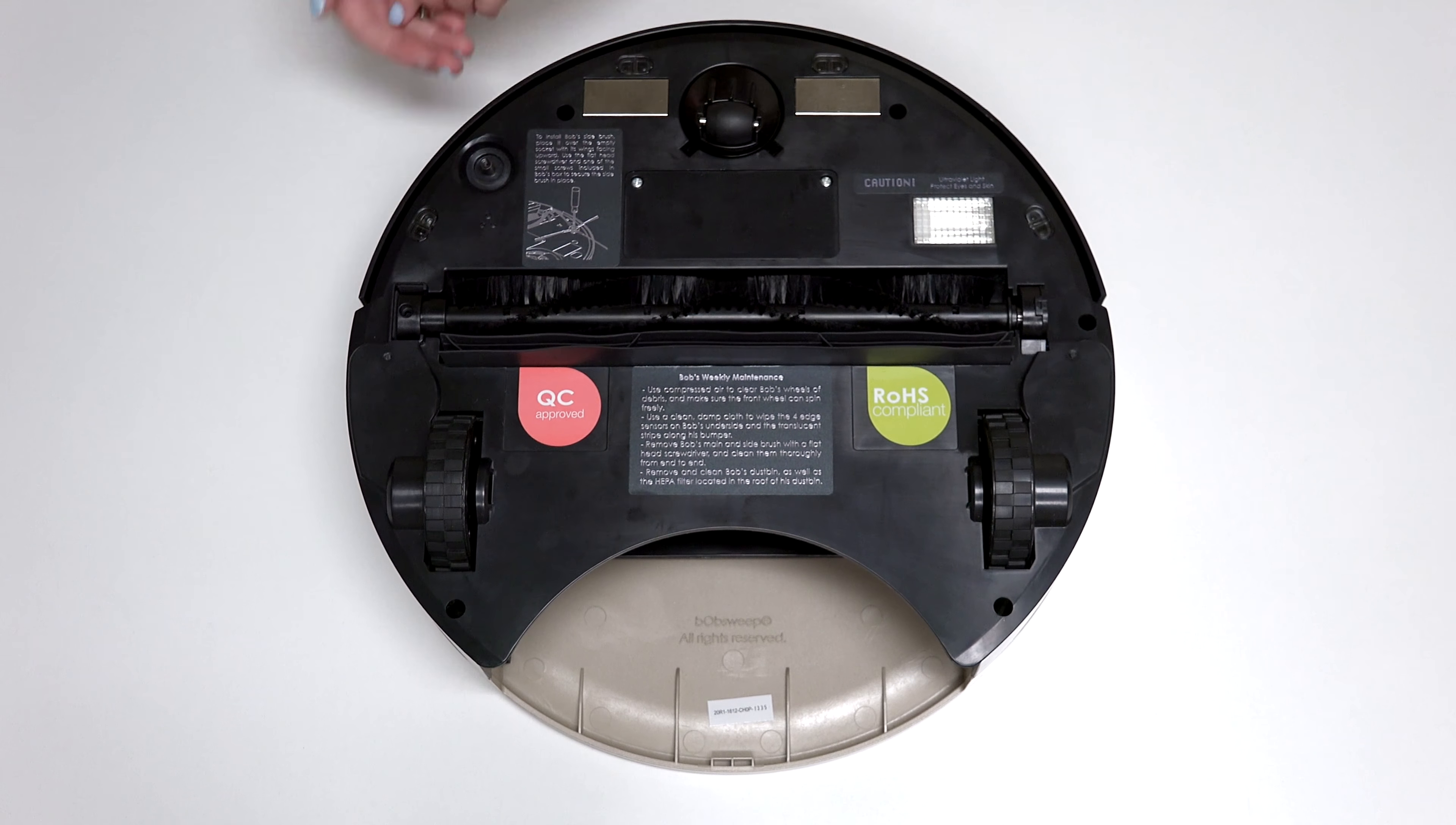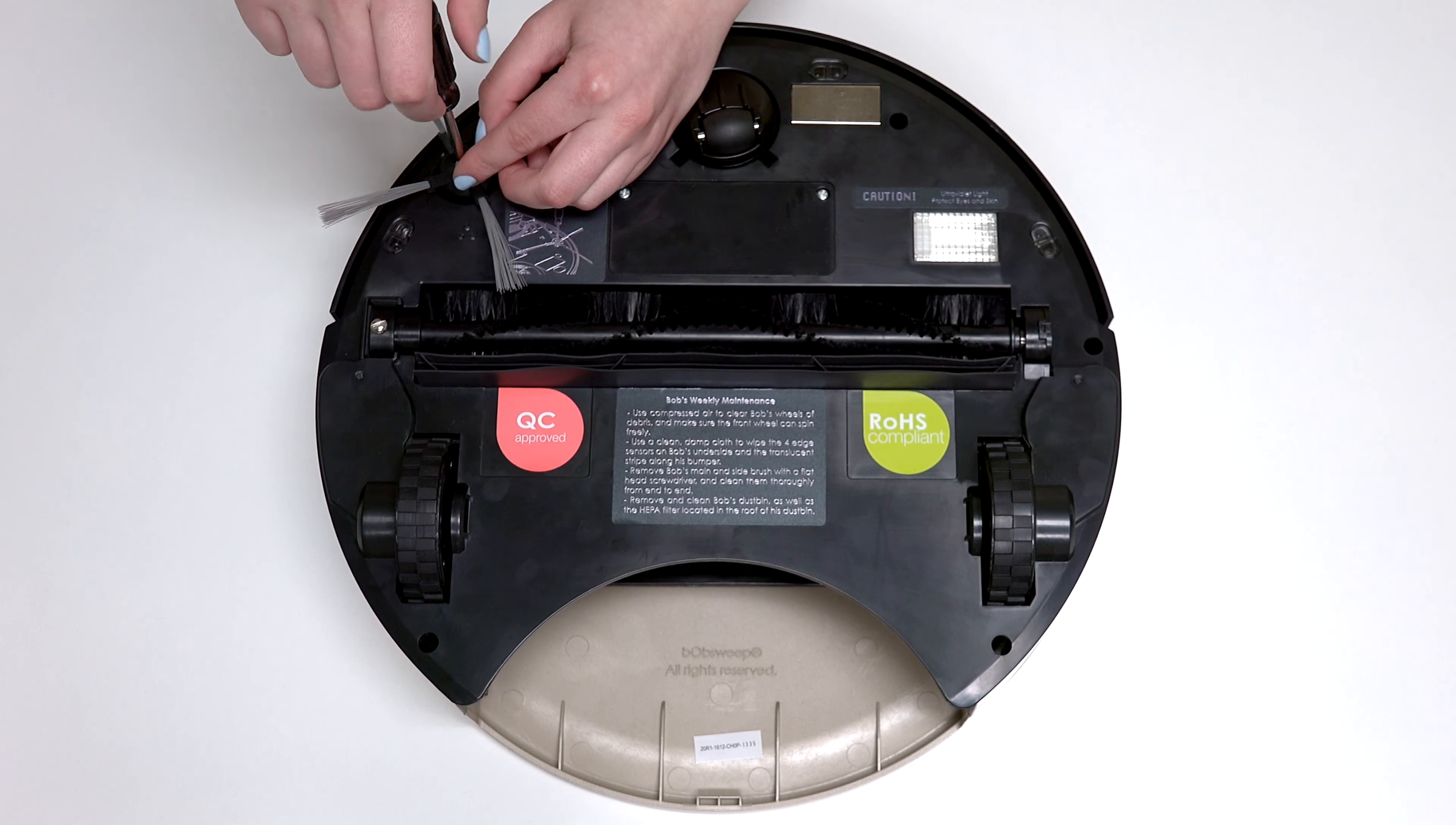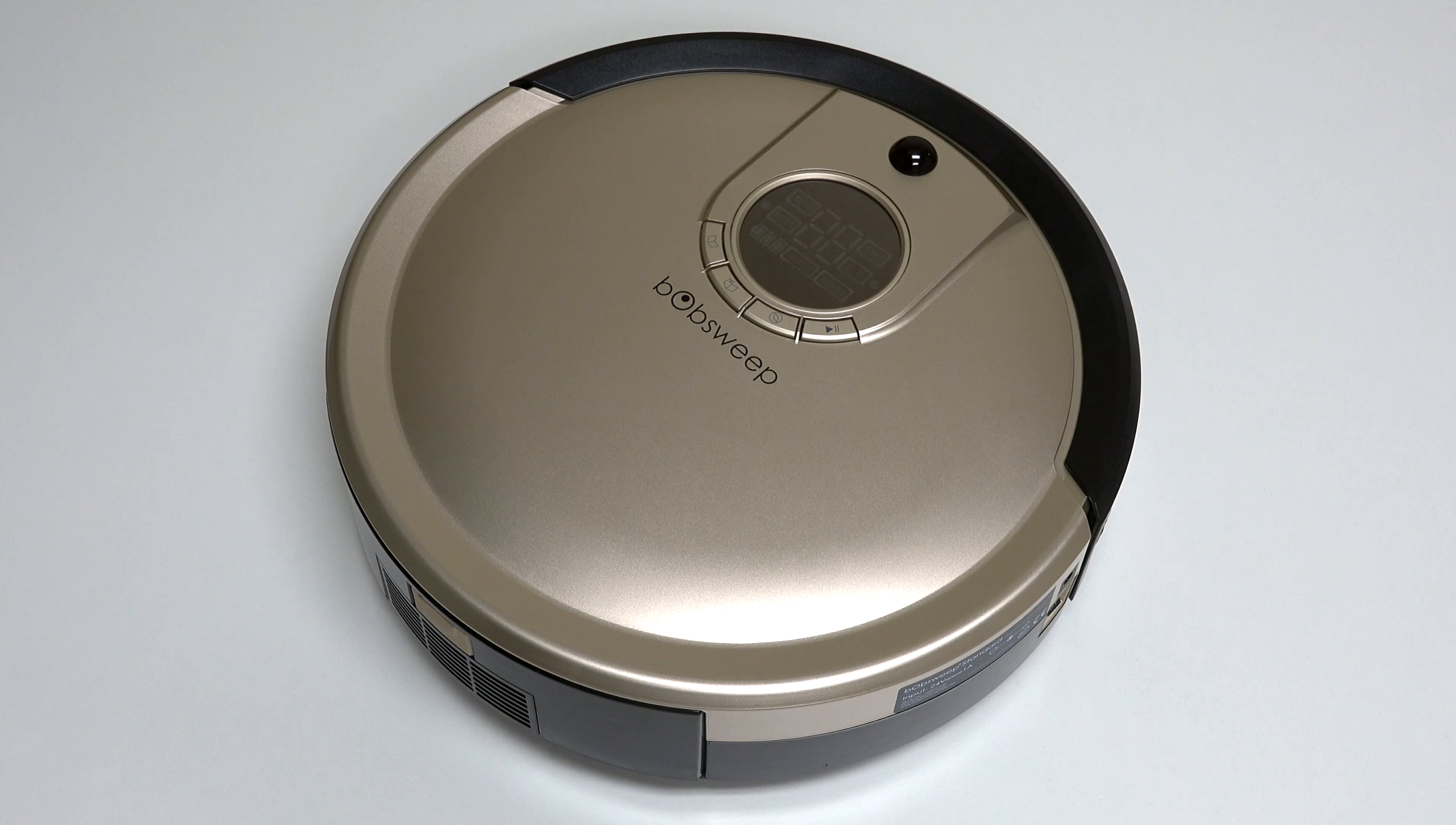Reinstall the main and side brushes using the flathead screwdriver. Replace the dustbin before your next use and congratulations! You've just replaced Bob's side brush motor. Happy cleaning!